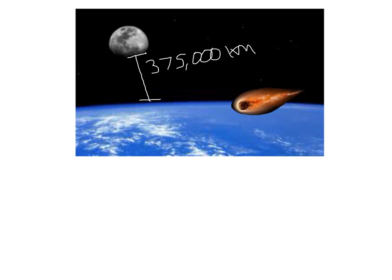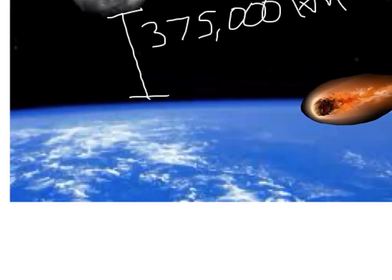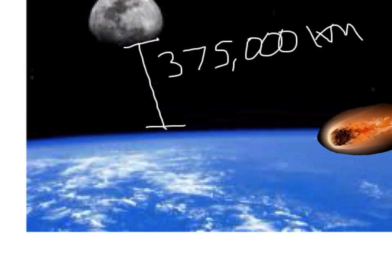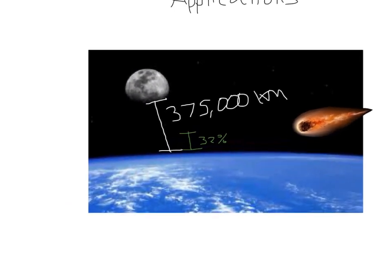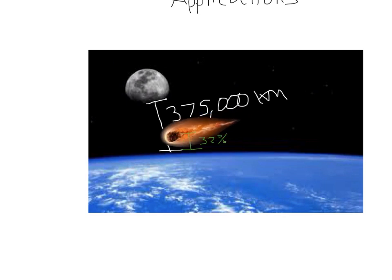an asteroid actually only missed the Earth by about 32% of that distance. Okay, that's actually kind of frightening. Because 32% is pretty much like right there now. I know obviously this is way bigger than it looks. But that distance is 32% of that distance. And the Moon is only 375,000 miles away from us. So essentially what happened is this asteroid comes screaming by right there. And he's gone. So he's gone.